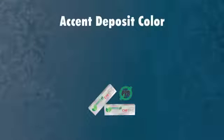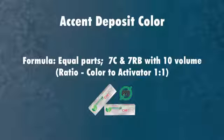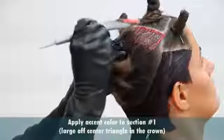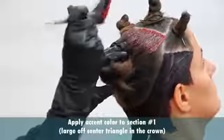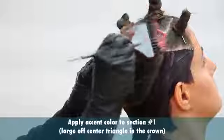Accent deposit color. Formula: equal parts 7C and 7RB with 10 volume. Ratio color to activator one to one. Apply all colors staying an eighth of an inch off the scalp. Apply accent color to section one, the off-center triangle on the crown.